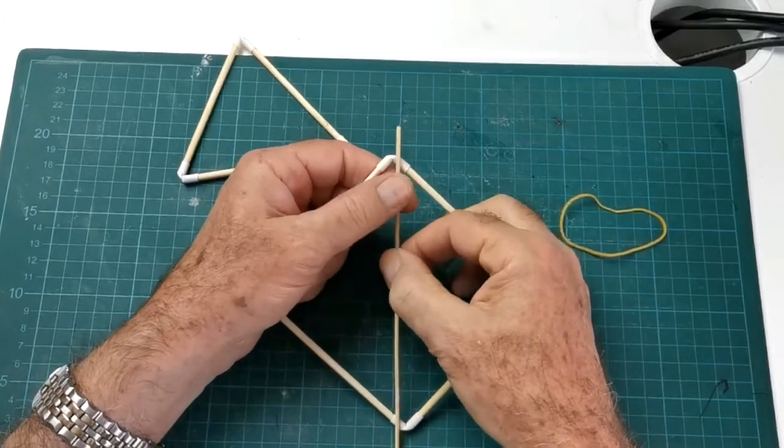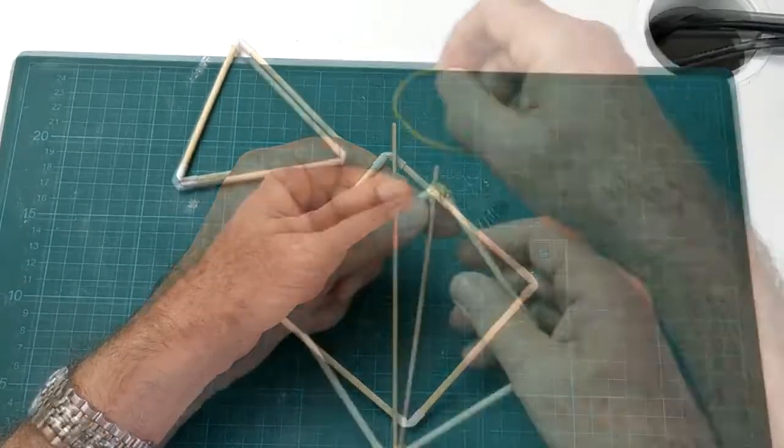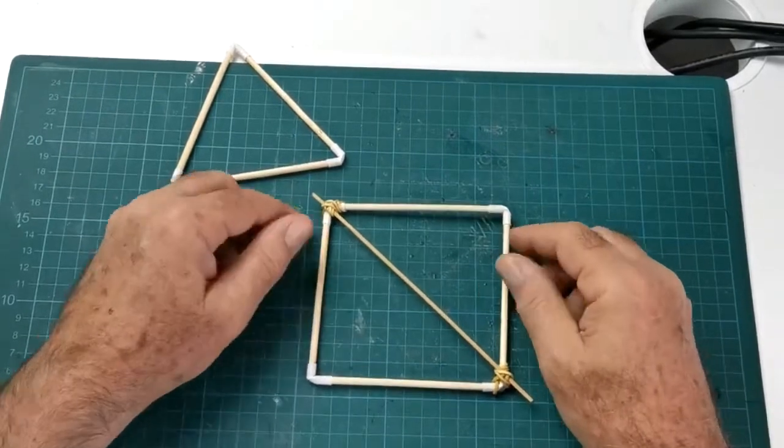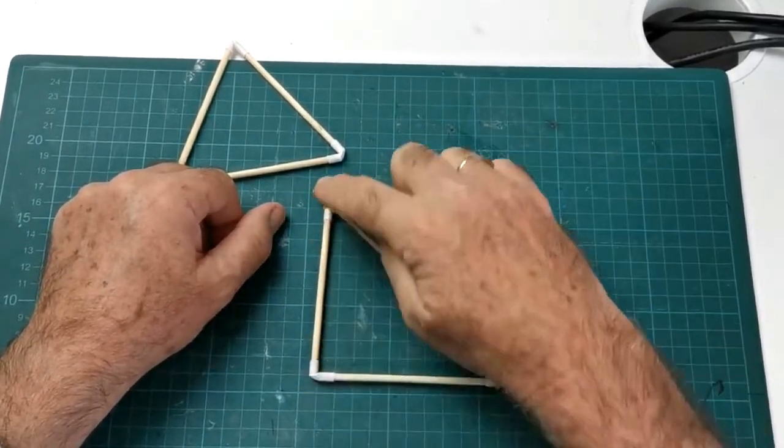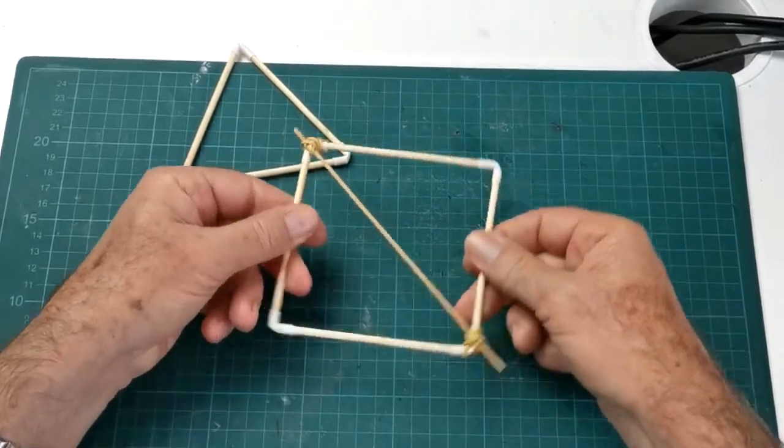If we join two opposite corners with a diagonal, we still have the quadrilateral, but it is now divided into two triangles, making it rigid.